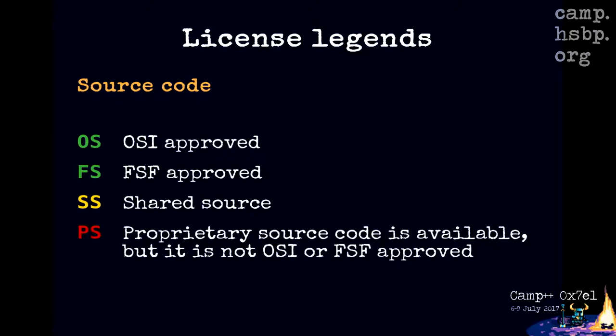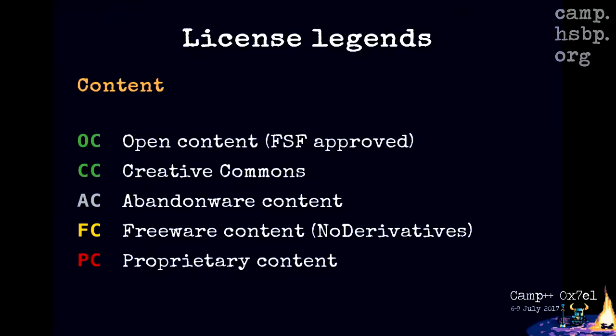License legends: I'm going to use color-coded acronyms to indicate if something's license complies with either the OSI or FSF's terms. The yellow one — shared source — is actually a Microsoft term; I'll talk about it. Since I will only talk about software that had its source code shared in some way, PS means the license does not grant you freedom to make it your own, but the source code is somehow accessible. OC means the license is recognized by OSI and FSF. There is another category for Creative Commons, and other retired licenses like Sampling Plus.